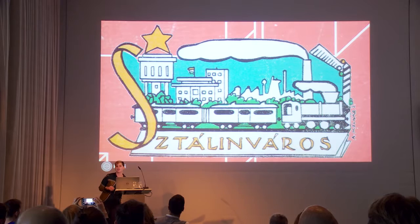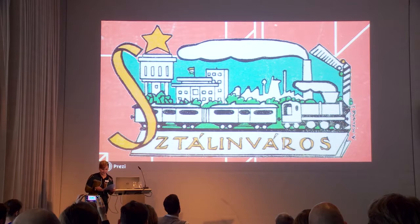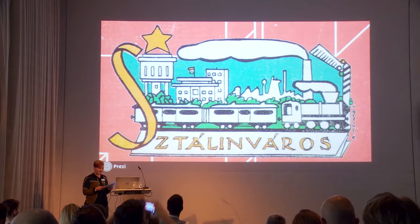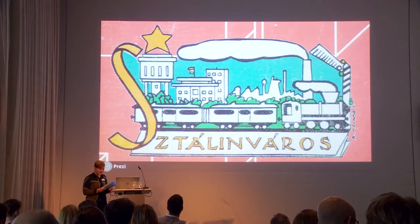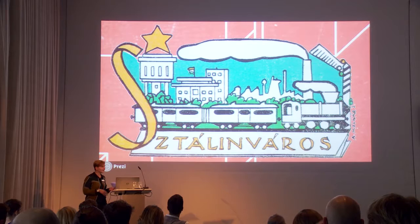The city was mentioned as a socialist town for the first time in autumn of 1950, and by the end of the following spring, the village of Dunapentele officially became the first socialist town in the country and took the name of Stalin. From 1951 to 1961 it was called Stalin City, similar to Stalingrad.